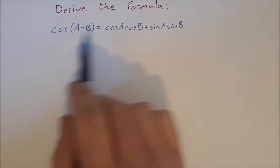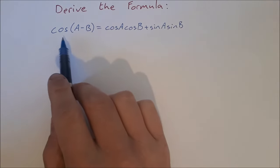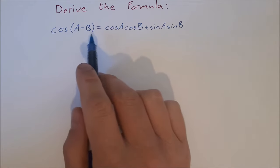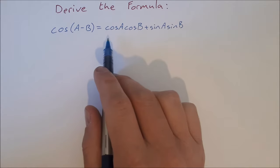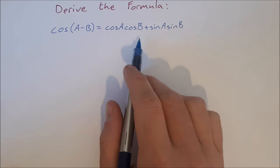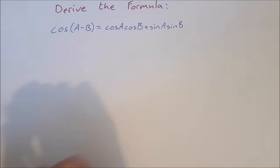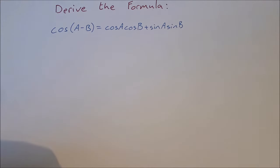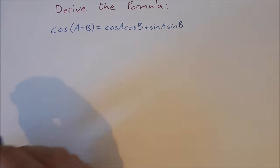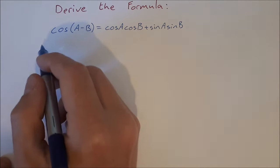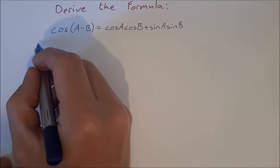Derive the formula: cos(a - b) = cos(a)cos(b) + sin(a)sin(b). This is one of our compound angle formulas, and to prove this one we start off with a unit circle.